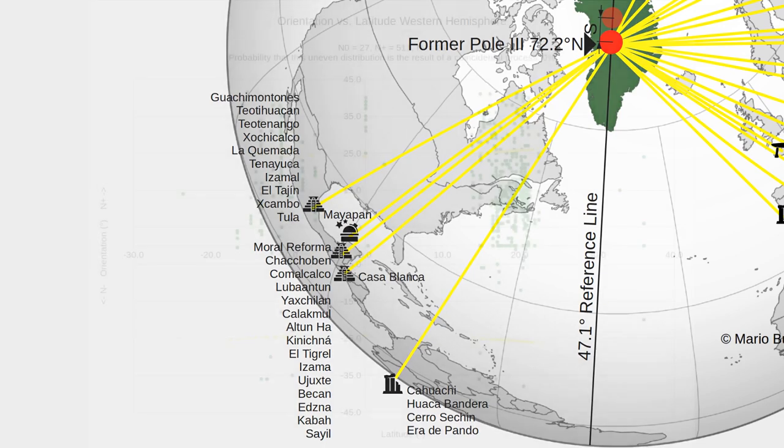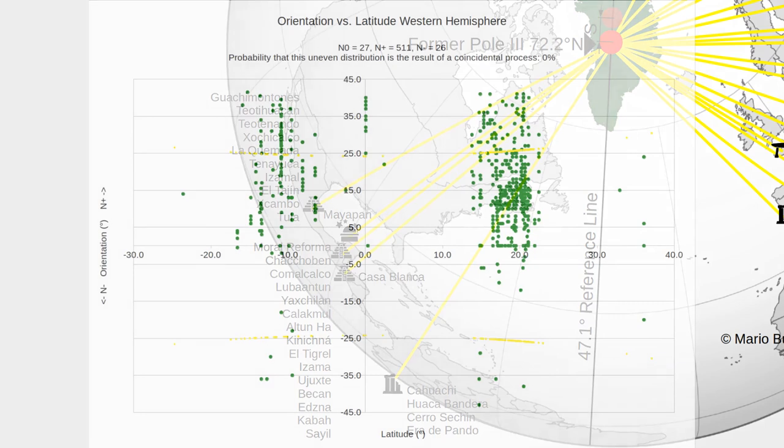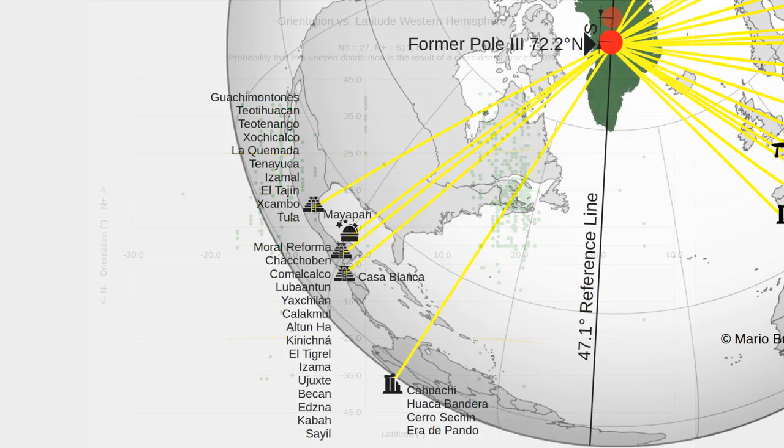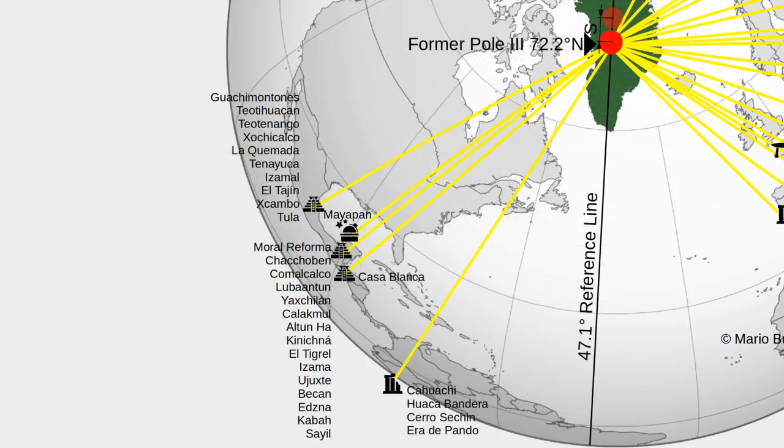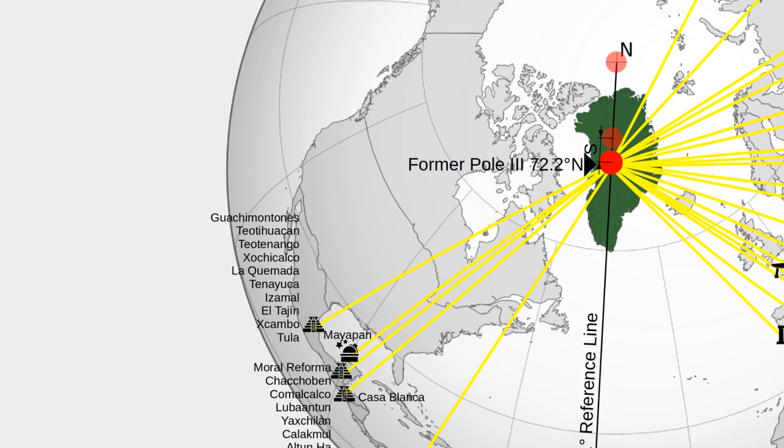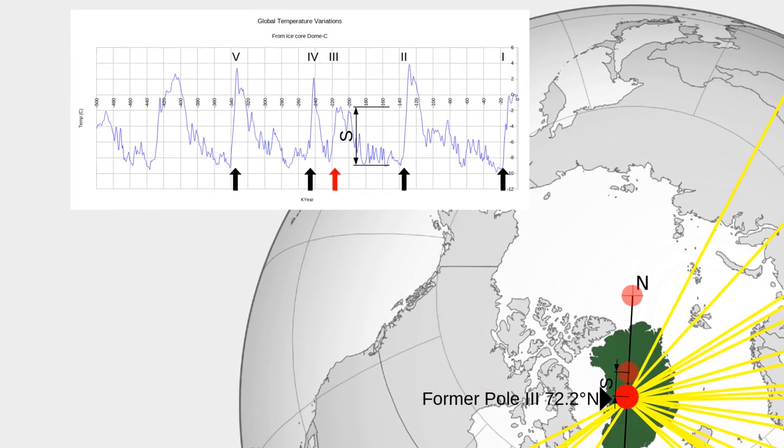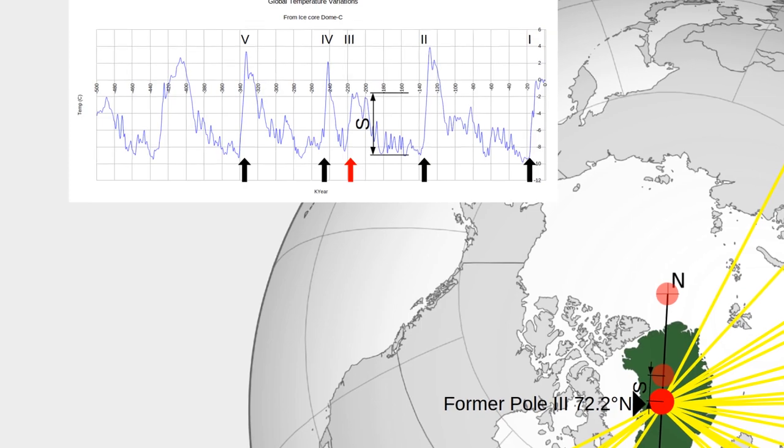This is the main reason why ancient structures in the Americas are oriented the way they are, namely to ancient geographic poles. And we have succeeded in dating the major structures of these lost civilizations. Our timeframes are surprisingly different from the official timeframes handed down by the academia.